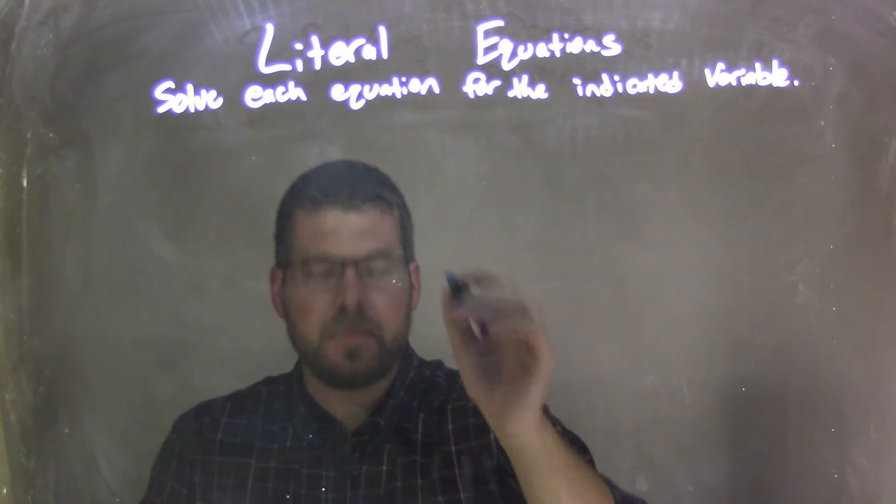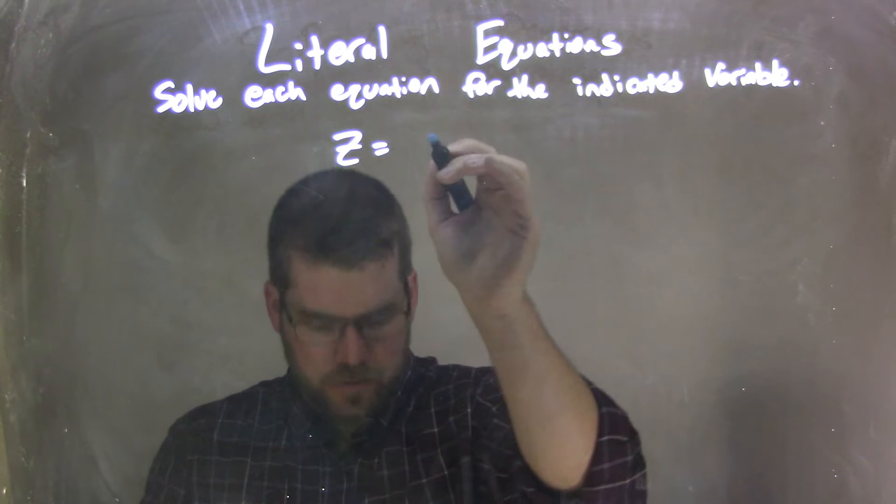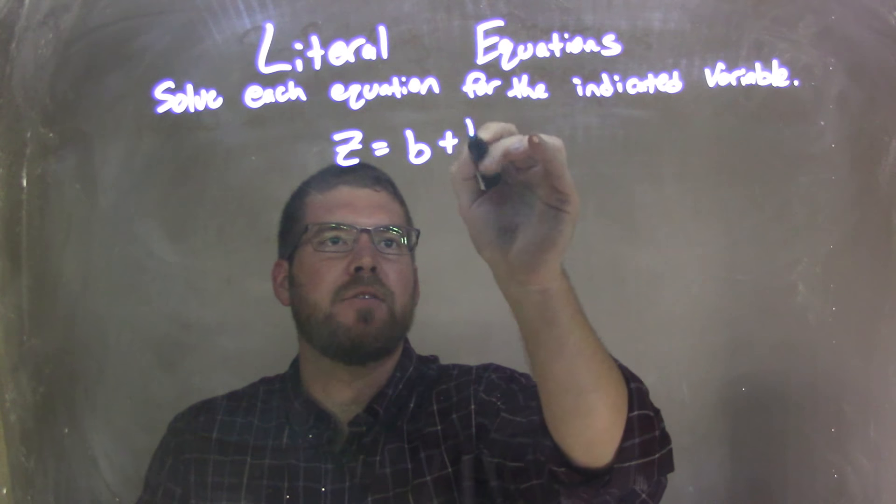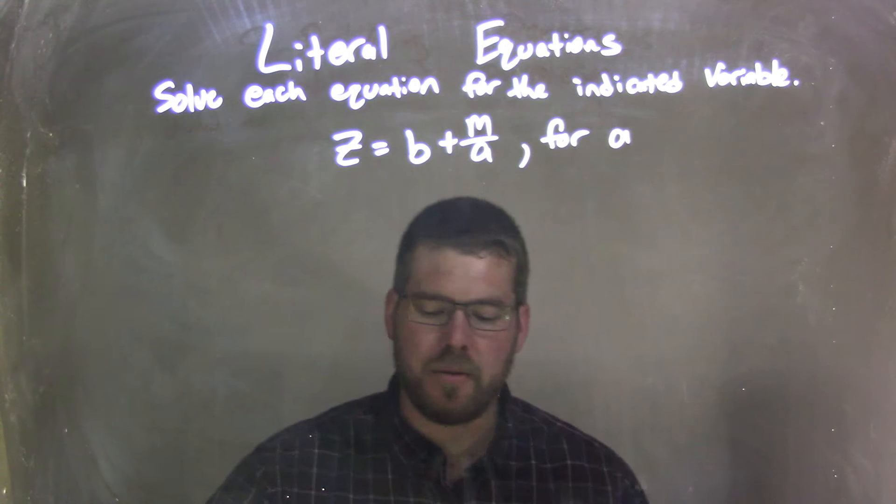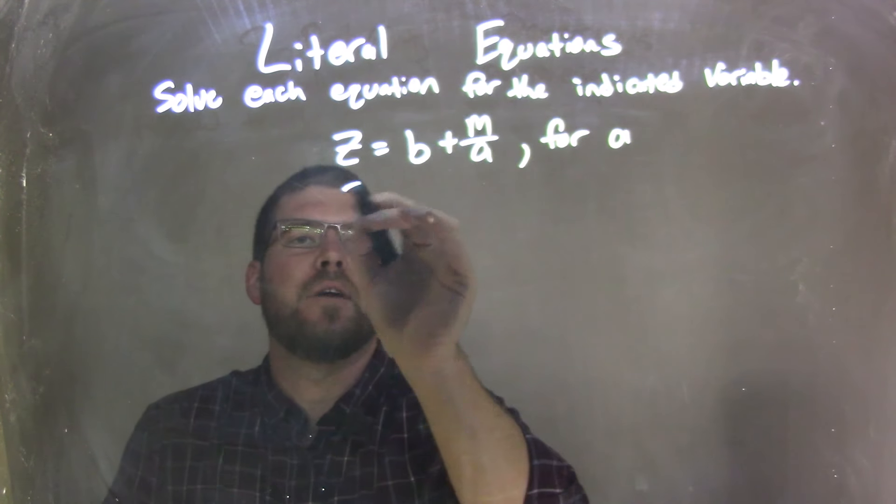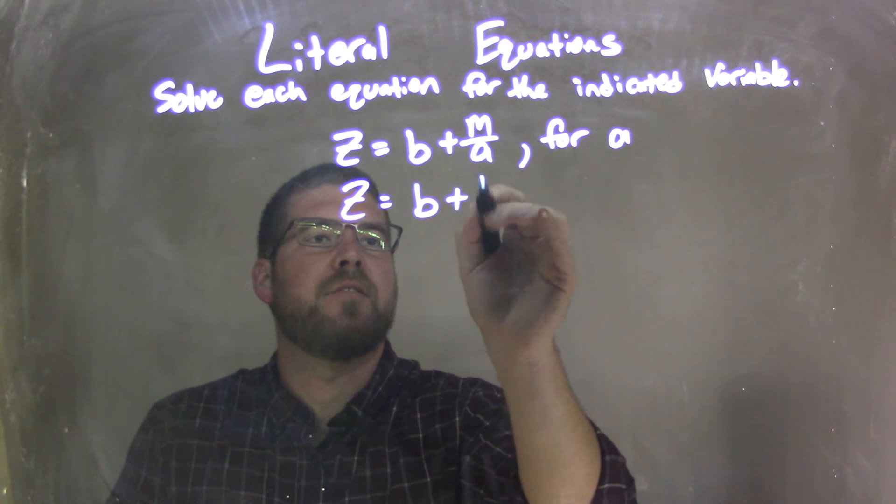So if I was given this equation, z equals b plus m over a, and we're solving that for a. Well, I'm going to rewrite my equation here, z equals b plus m over a.